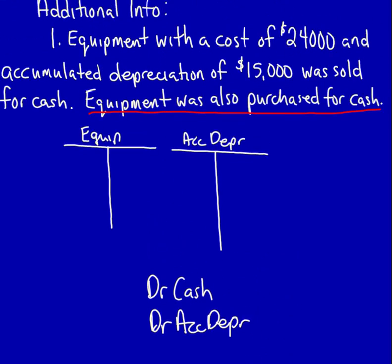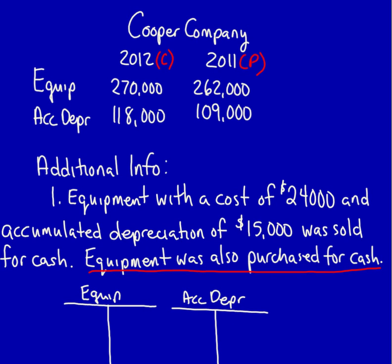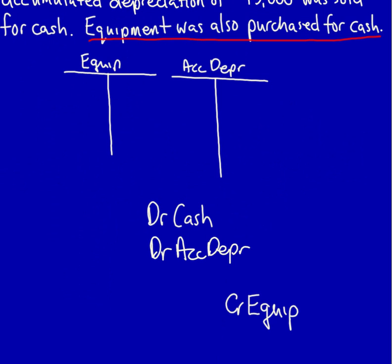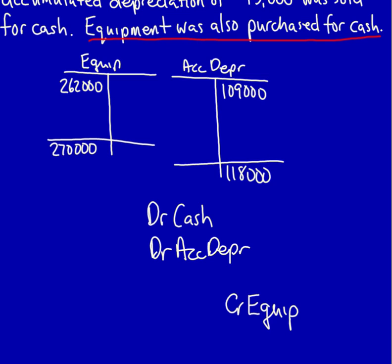The next step is to fill in the information from the statement of financial position, also called the balance sheet. Equipment has an opening balance of $262,000 and a closing balance of $270,000. Accumulated depreciation has an opening balance of $109,000 and a closing balance of $118,000. We've now filled in what we can from the balance sheet.